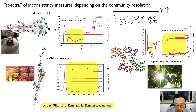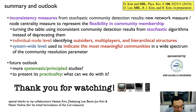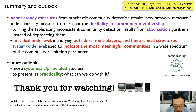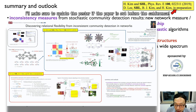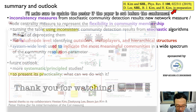So that is our final message and the practicality of our work. Our main message is that inconsistency is not necessarily a bad thing. At the individual node level, we can identify outsiders and multiplayers. Using the system-wide level inconsistency measure, we can indicate the most meaningful communities or most meaningful scales of communities across a wide spectrum of the community resolution parameter. For details, you can check our poster in one-page PDF format on the conference website, and hopefully we will finalize the second paper and release it to the world very soon. Thank you for watching.